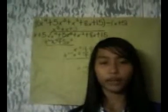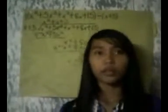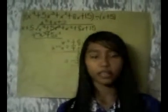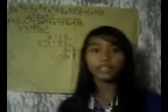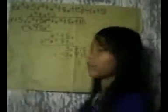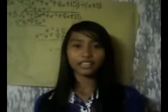3x plus 15 plus negative 3x minus 15 is equal to 0, and our remainder is 0. So the quotient of our given is x cubed plus x plus 3 and the remainder is 0. This means there is no difference between the dividend x to the 4th power plus 5x cubed plus x squared plus 8x plus 15 and the product of the quotient x cubed plus x plus 3 and the divisor x plus 5. I hope you understand our lesson. That's all. Thank you.